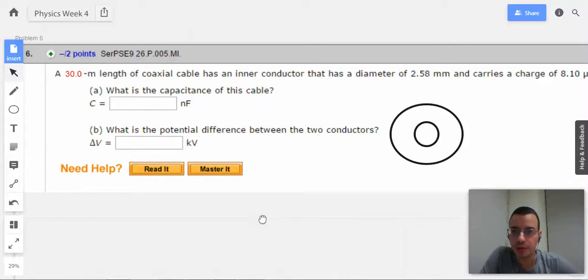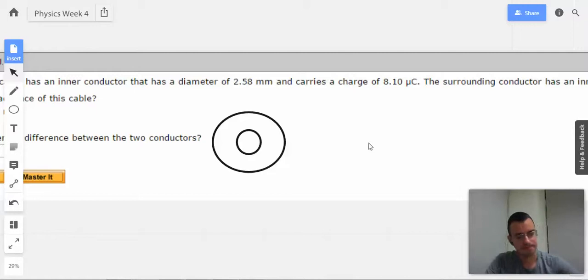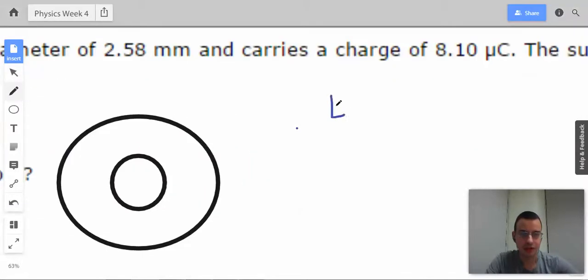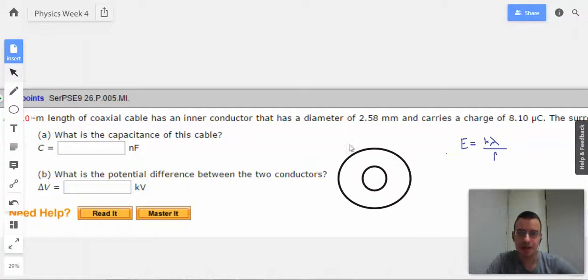We're going to have trouble with the trick that we did last time with the last problem because we already knew what the voltage was. This time I'm not quite sure what the potential is for an infinite line. I do know what the electric field is though, which is something everyone should have memorized. K lambda over R.